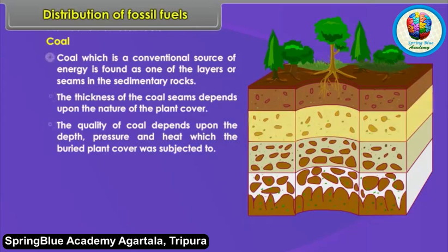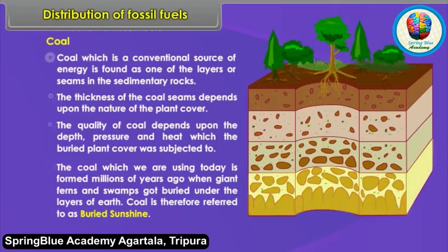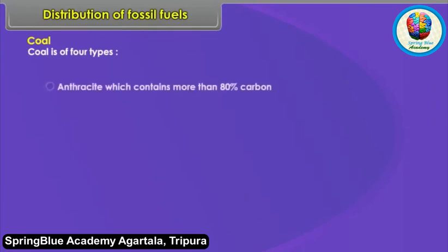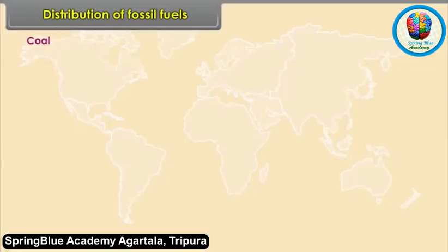The coal we use today was formed millions of years ago when giant ferns and swamps got buried under layers of earth. Coal is therefore referred to as 'buried sunshine.' Coal is of four types: Anthracite, which contains more than 80% carbon; Bituminous, which contains 60 to 80% carbon; and Lignite, which contains 50 to 60% carbon. World distribution of coal: Russia, USA, China, Australia, parts of Western Europe, South Africa and India.